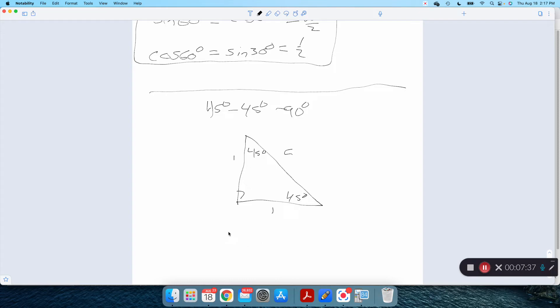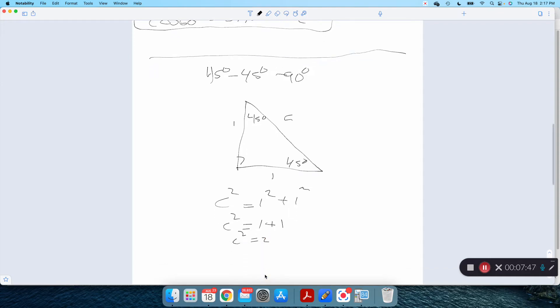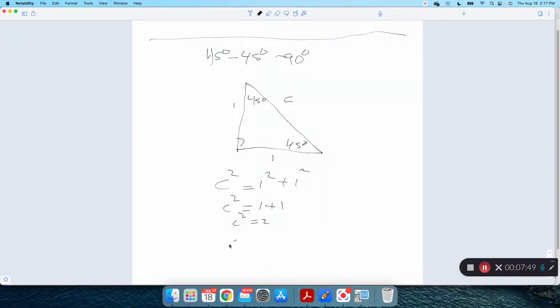Just using Pythagorean, c squared will be 1 squared plus 1 squared. So c squared will be 1 plus 1. C squared is 2. But I don't care about c squared. I want c. c must be square root of 2.